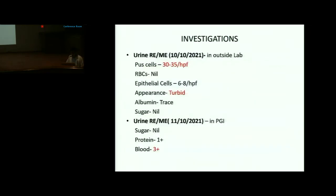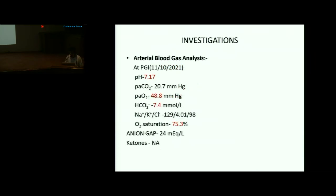Urine microscopy outside showed pus cells 30-35 per high power field. At PGI, urine showed sugar nil, protein 1+, and blood 3+. ABG showed pH 7.17, bicarbonate 7.4, oxygen saturation 75.3%, sodium 129, with a high anion gap metabolic acidosis; anion gap was approximately 24.